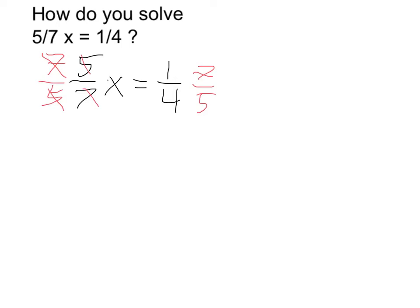So when I do multiply top by top, bottom by bottom, x is going to be equal to 7 over 4 times 5, which is 20.